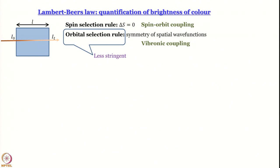Since we are talking about transitions that are more or less probable, we need some experimental means to determine which transition is more probable and which is less probable. An experimental parameter that tells us about the probability of transition is obtained in the form of Lambert-Beer's law. Lambert and Beer independently proposed something, and combining them gives the law. Let us say this rectangle is a sample.